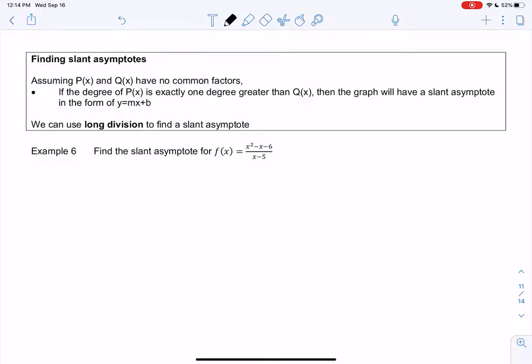The last type of asymptote is called a slant asymptote. This will only happen if there is no horizontal asymptote. Just because there's no horizontal doesn't mean it will happen, but if there is a horizontal asymptote, this will not happen. If there is none, then this is possible.